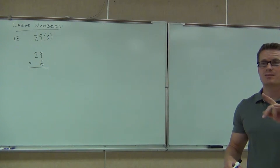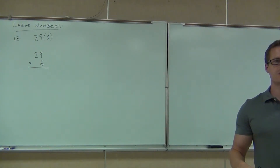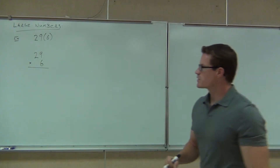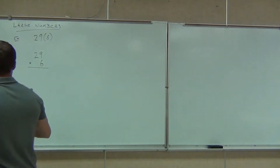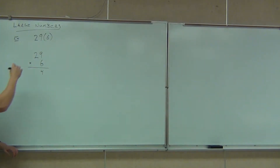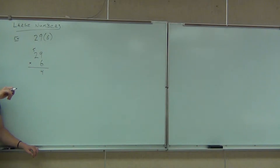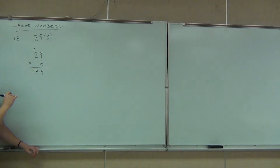So what two numbers specifically are we going to multiply? 9 and 6. Everybody, what is 9 times 6? 54. And just like with addition, when we have 54, we only write the four 1s. What do we do with the other 5? Carry it over. Now what? 6 times 2, plus 5. So 6 times 2 is 12, plus 5 is 17. That's it — we get 174.